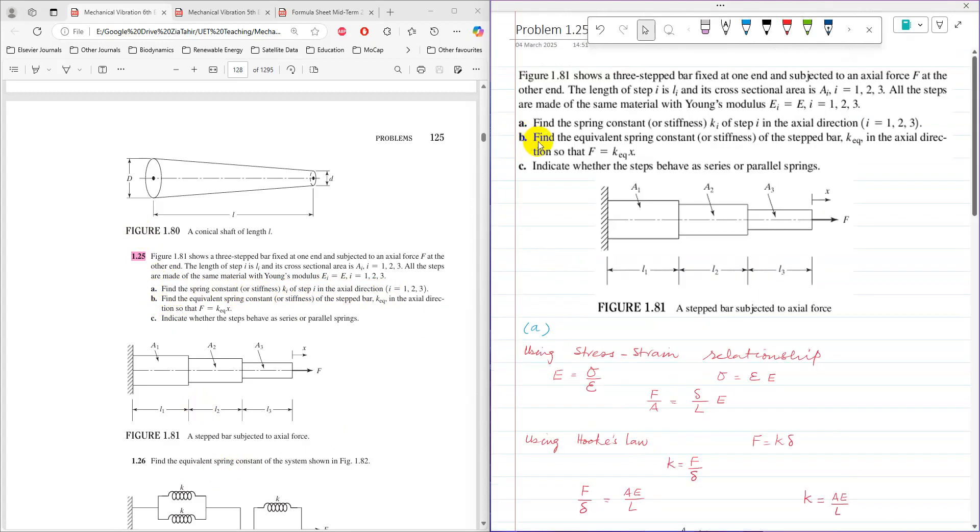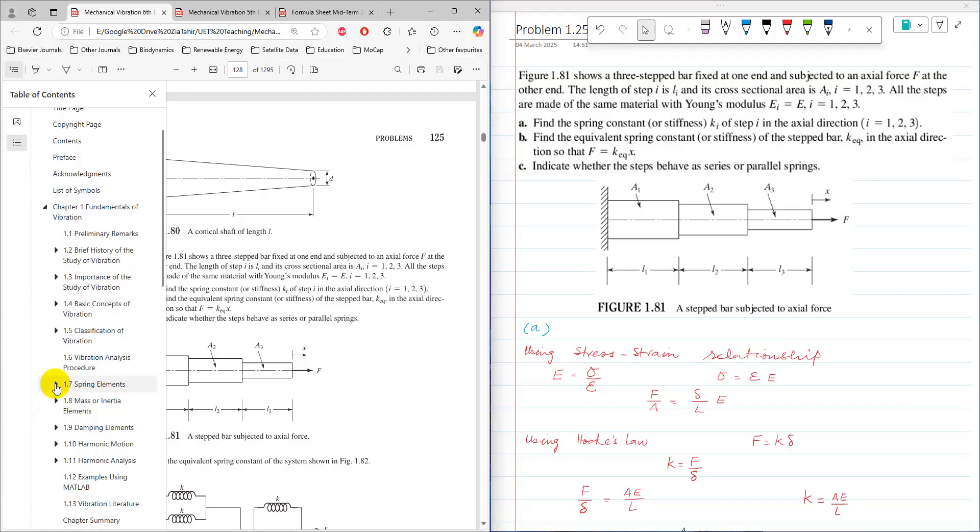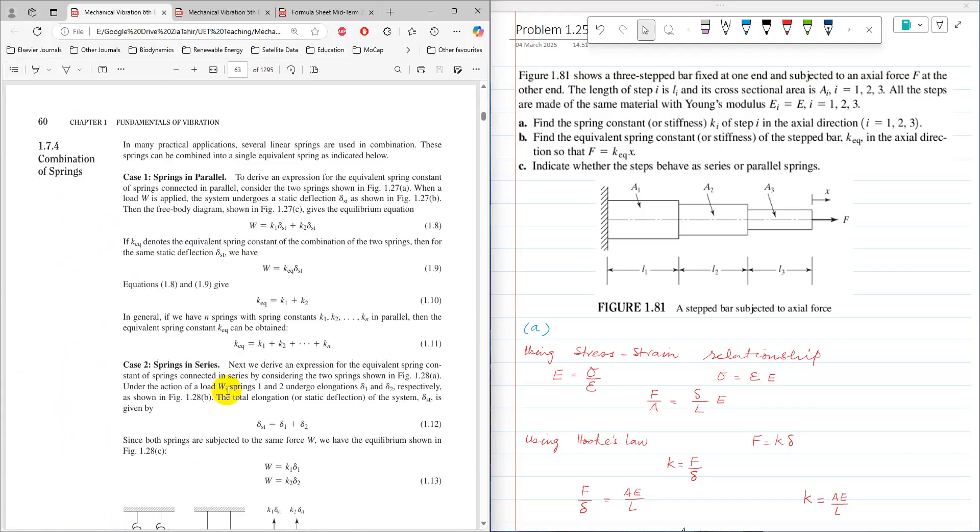Now for part B, find equivalent spring constant of the step bar, K equivalent, in axial direction, so that F equals K equivalent times X. The most suitable topic for this is spring elements and then combination of springs.